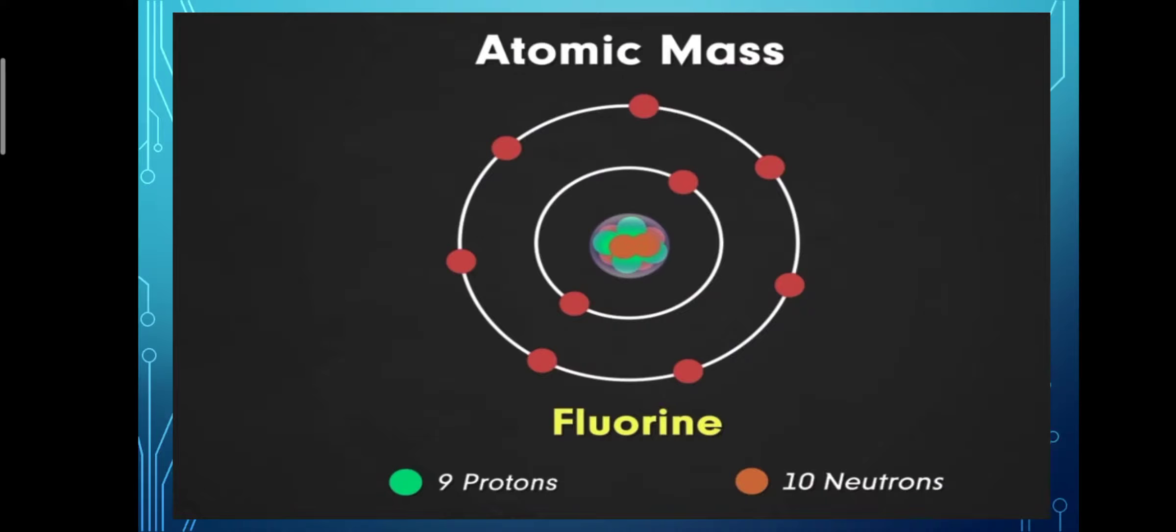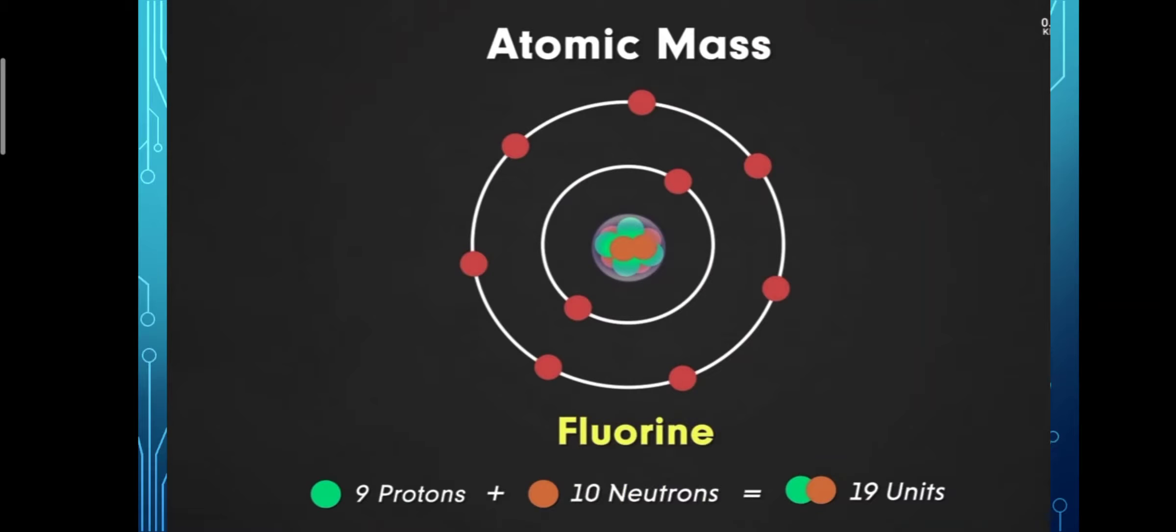For example, fluorine. In fluorine atom, fluorine atom contains 9 protons and 10 neutrons in its nucleus. So the atomic mass of fluorine is 19 units because fluorine atom contains 9 protons plus 10 neutrons.